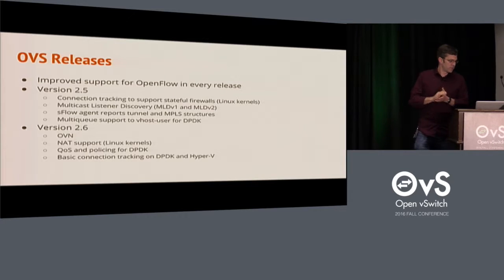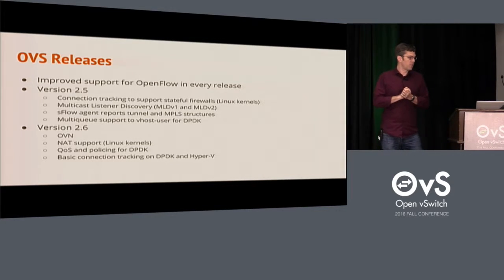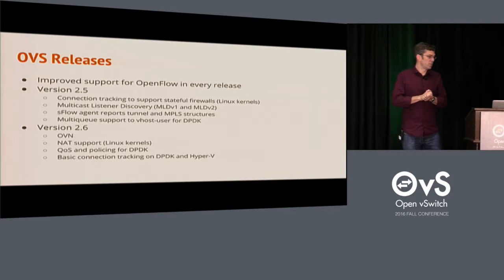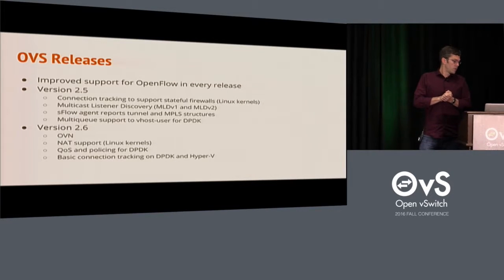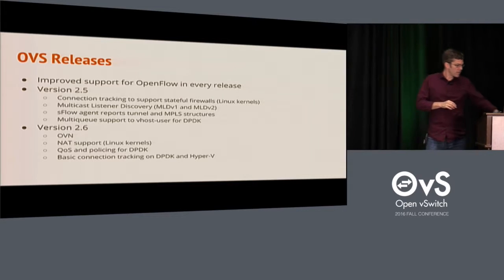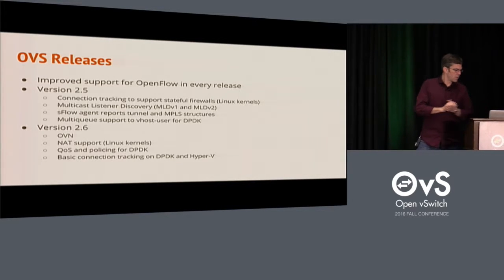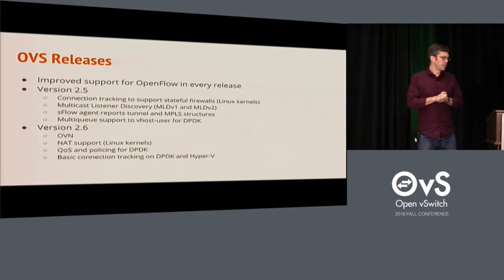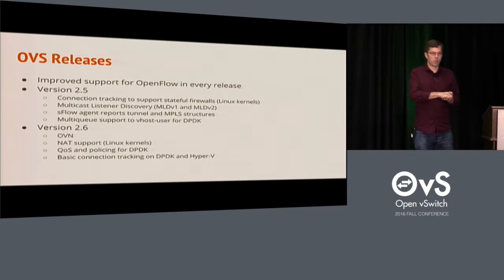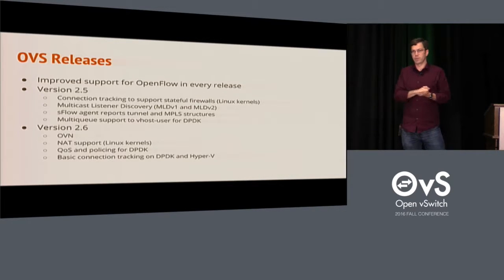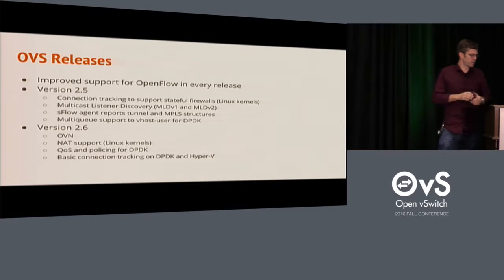Another significant performance improvement was for the DPDK port — support for multi-queue and vhost. In 2.6, as I mentioned, we introduced OVN. Another big feature similar to connection tracking was support for NAT added to the Linux data path. Similar to connection tracking, I think we'll start seeing that come to the other data paths as time goes on.